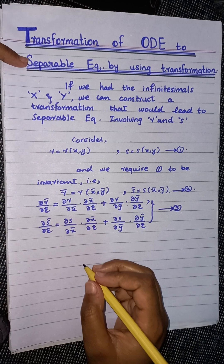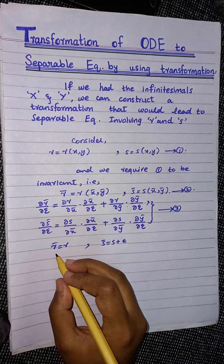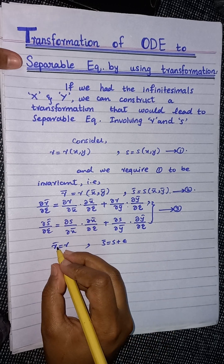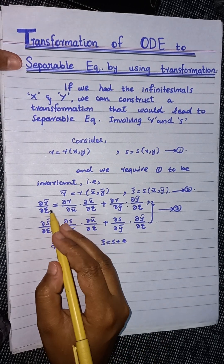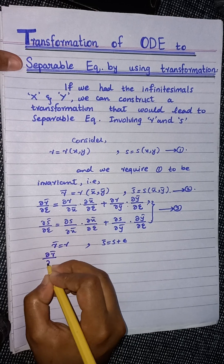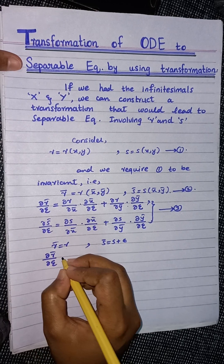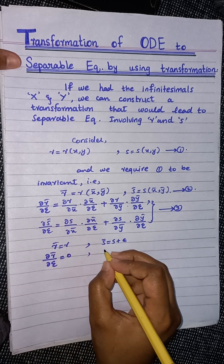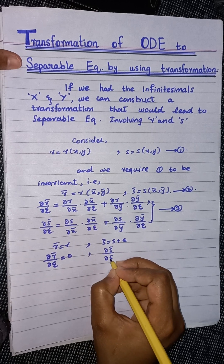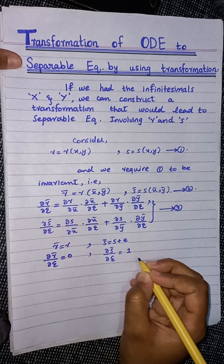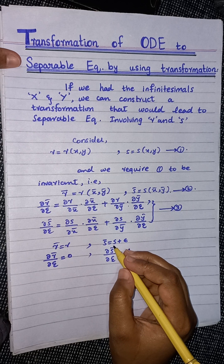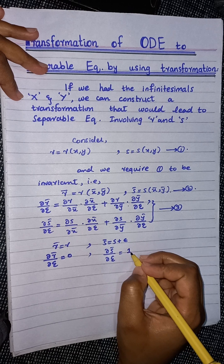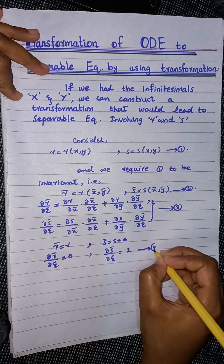If we consider r̄ = r and s̄ = s + ε, then taking the partial derivative of r̄ with respect to ε gives ∂r̄/∂ε = 0, because r can be treated as a constant with respect to ε. Similarly, taking the partial derivative of s̄ with respect to ε gives 1, because s is treated as a constant and the derivative of ε with respect to ε equals 1. Say this is equation number 4.